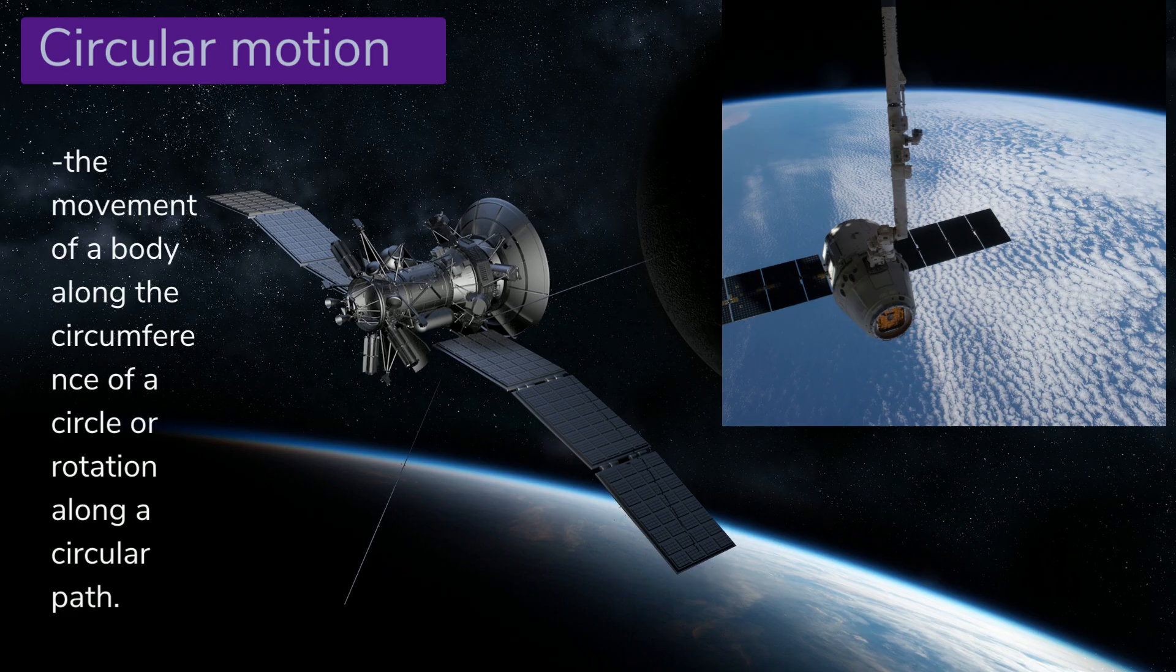An artificial satellite orbiting the Earth at a constant height, gears in the gas turbines, a ceiling fan's blade rotating around the hub, a car turning to a curve in a racetrack, and blades in a windmill.